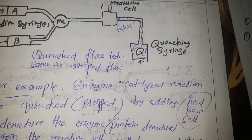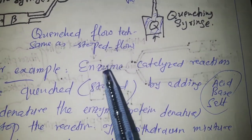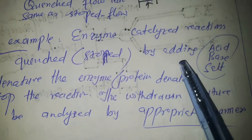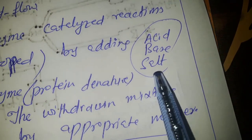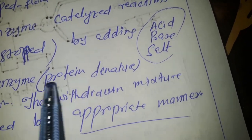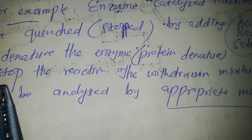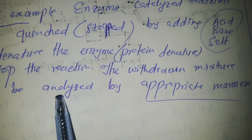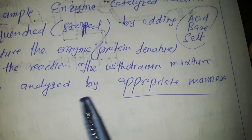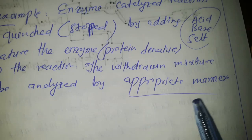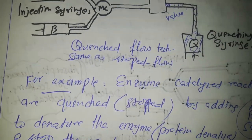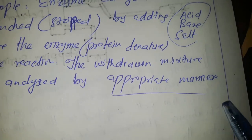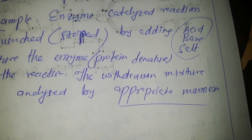An example of such reactions is enzyme-catalyzed reactions, which are quenched by adding an acid, base, or salt solution that denatures the enzyme — since enzymes are protein in nature — thereby stopping the reaction. The drawn reaction mixture or sample can then be analyzed by an appropriate manner outside the experimental setup, since no further reaction is occurring, giving us information about the kinetics of that particular reaction.